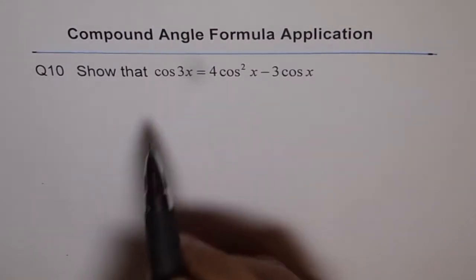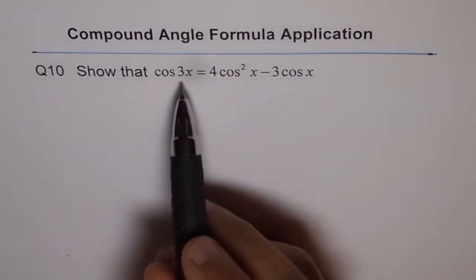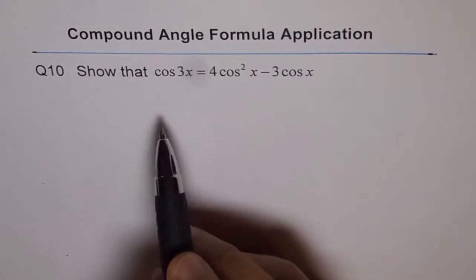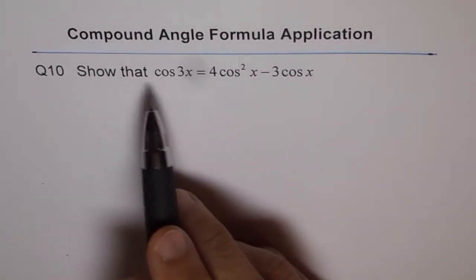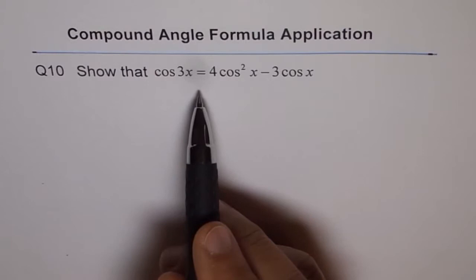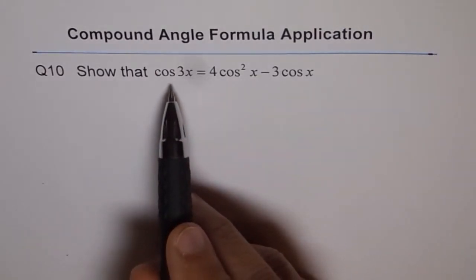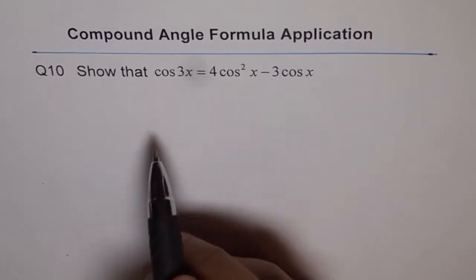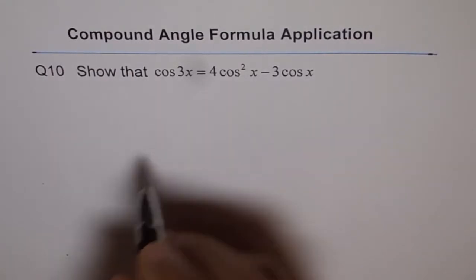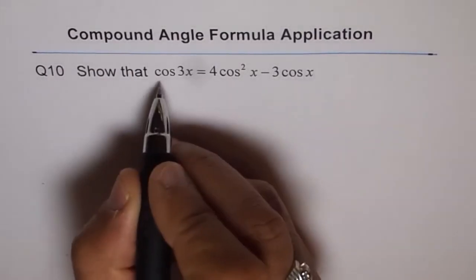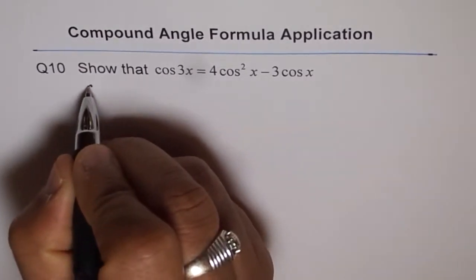Here we will use compound angle formula and we can write 3x as 2x plus x, then we will expand it and get cos 2x cos x minus sine 2x sine x. That means we also need the formula for cos 2x and sine 2x. So as a quick reminder, let me give you the formulas for cos 2x which we are going to apply here.